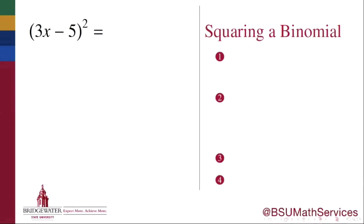The example that's shown here, 3x minus 5, is a binomial because its two terms are 3x and 5. So how do we square a binomial?